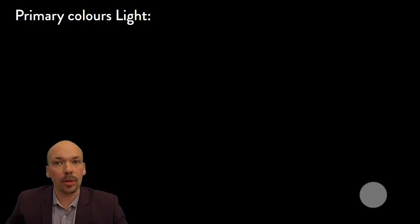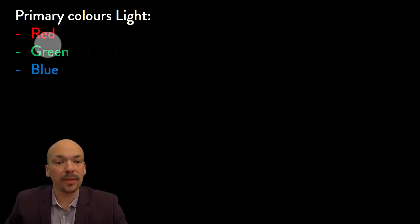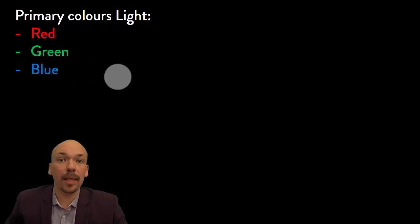From all these colors there are three colors which are the most important — the primary colors. They are red, green, and blue. Green is often mistaken for yellow, but green is a primary color. Yellow is a primary color when we are looking at ink and painting, but with light, red, green, and blue are the primary colors. And with these three colors you can make all colors of the rainbow.